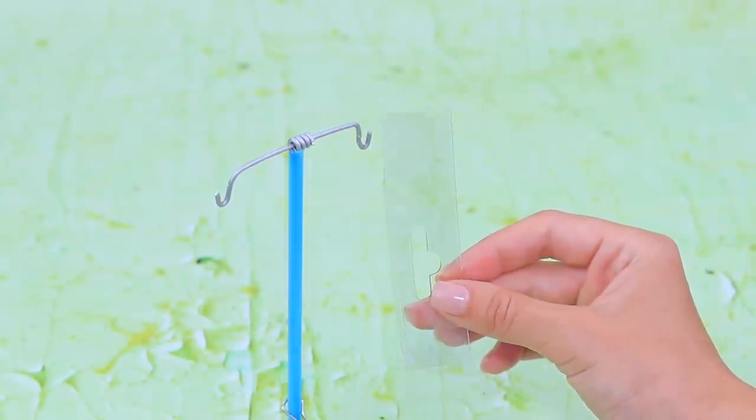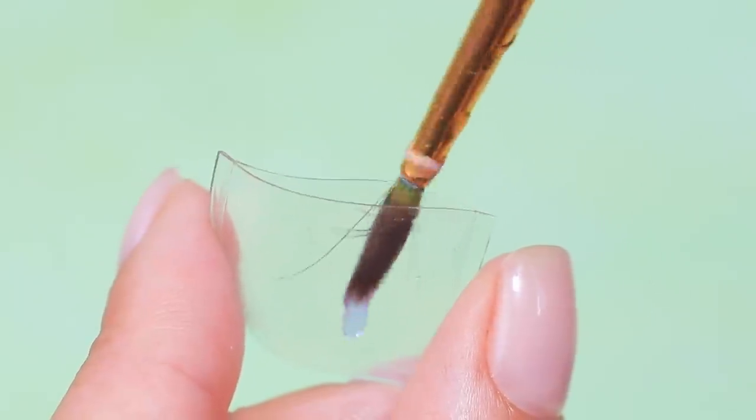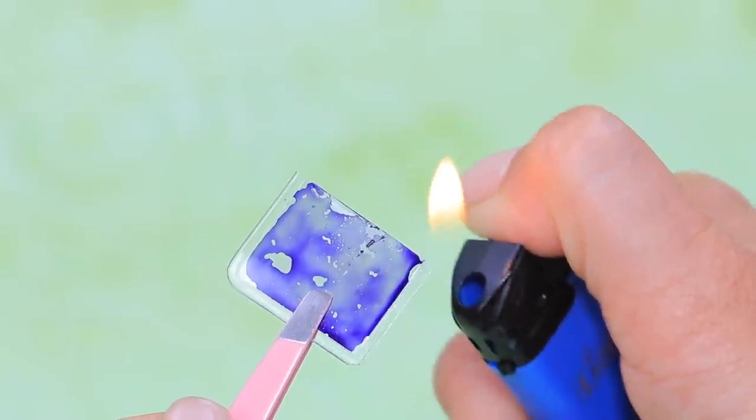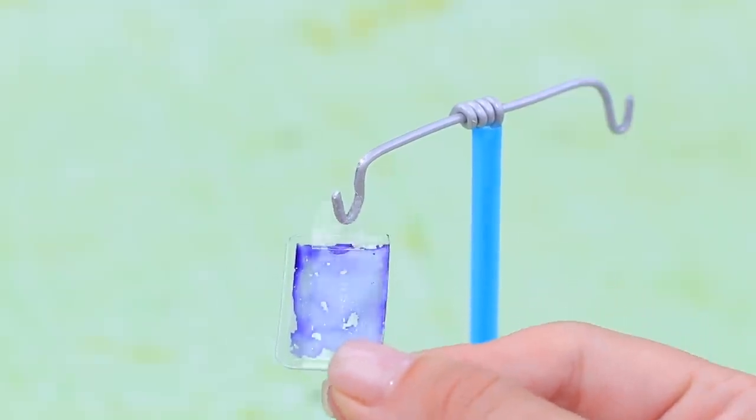Cut small bags out of a plastic package. Add watercolor paint to some water and pour it in. Seal the edges. Add handles and hang the bags on the stands.